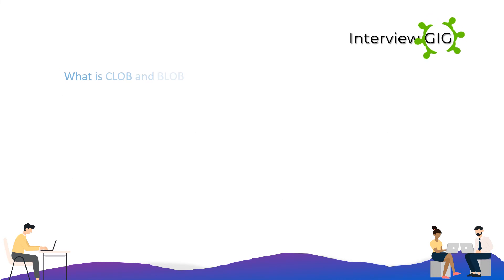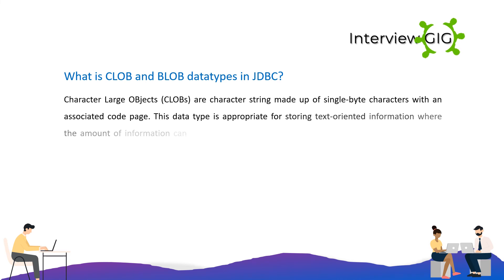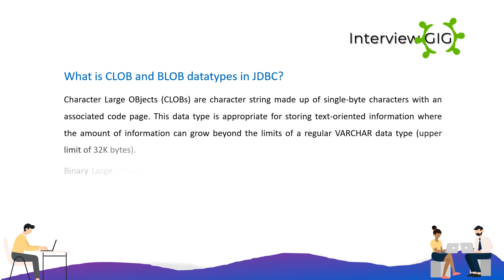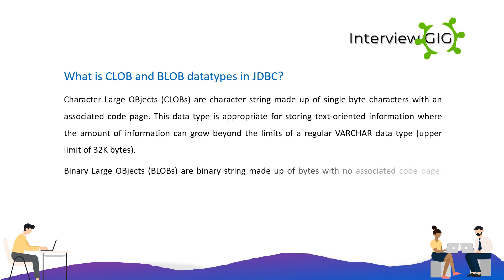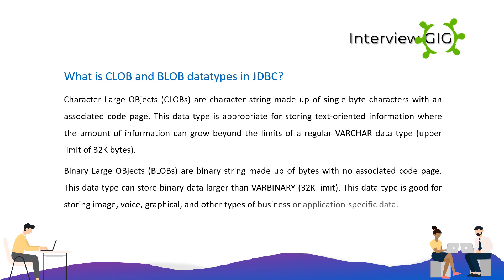What is CLOB and BLOB data types in JDBC? Character large objects (CLOBs) are character strings made up of single-byte characters with an associated code page. BLOB (Binary Large Object) can store binary data larger than the VARBINARY 32K limit. This data type is good for storing image, voice, graphical, and other types of business or application-specific data.